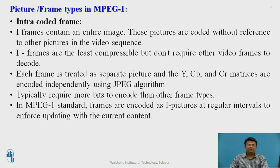The first frame type in MPEG-1 is the intra-coded frame, or I-frame, which represents the entire image. These pictures are coded without reference to any other picture in the video sequence. I-frames are the least compressible but don't require any other video frames to decode. Each frame is treated as a separate picture and the Y, Cb and Cr matrices are encoded independently using the JPEG algorithm. They typically require more bits to encode than other frame types. In MPEG-1, I-frames are encoded at regular intervals to enforce updating with current content.